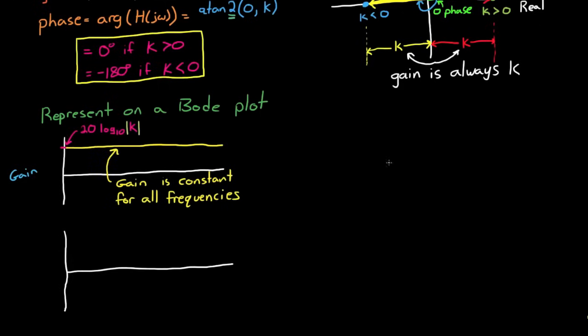And luckily for this example, phase isn't much more difficult. Phase is 0 degrees when k is positive, and it's minus 180 degrees when k is negative. But again, the phase stays constant either at 0 degrees or at minus 180 degrees. It stays constant across all frequencies.